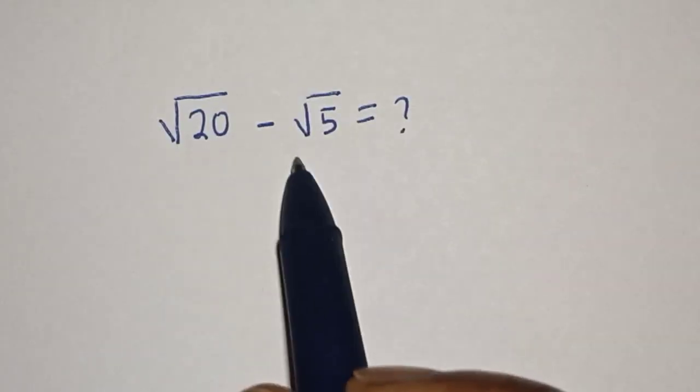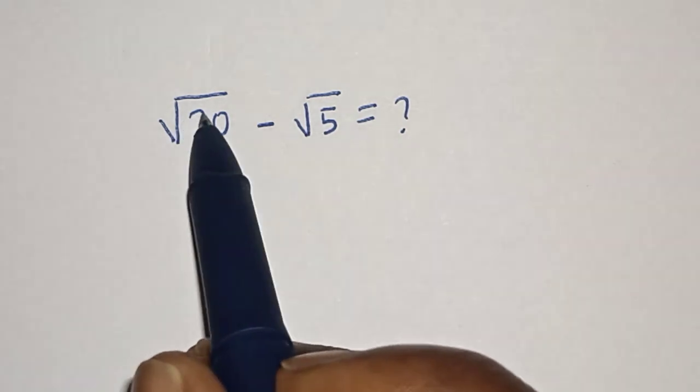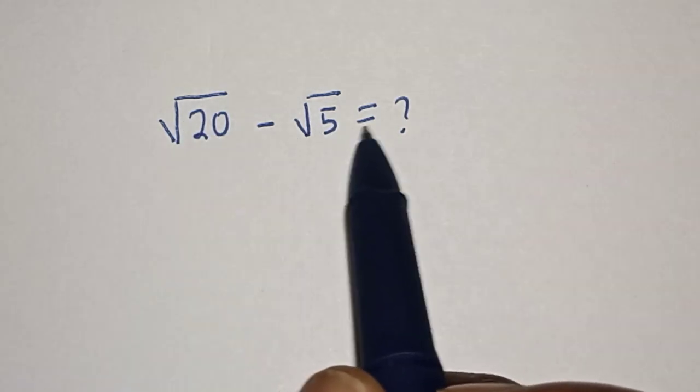Hello, welcome to Madges. In this class, we want to simplify this nice math problem. Square root of 20 minus square root of 5 is equal to what?